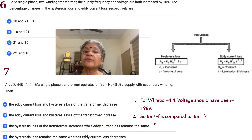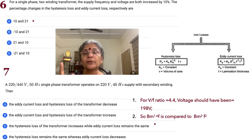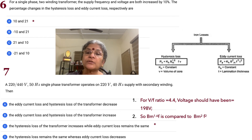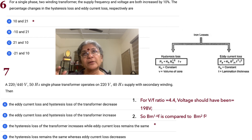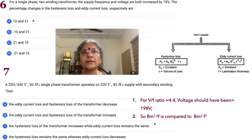Problem 6: for a single-phase two-winding transformer, both supply frequency and voltage are increased by 10%. Since V/f remains the same, flux is unchanged. A 10% increase in frequency gives a 10% increase in hysteresis loss (proportional to f). For eddy current loss, frequency squared gives 1.1² = 1.21, so a 21% increase.